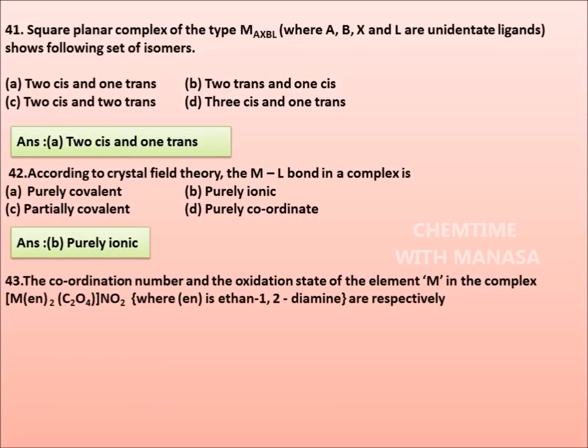Question number 43. The coordination number and oxidation state of the element M in complex M(EN)₂(C₂O₄)(NO₂) where EN is ethane-1,2-diamine are respectively: 4 and 3, 4 and 2, 6 and 3, 6 and 2. Correct answer is option C, 6 and 3.